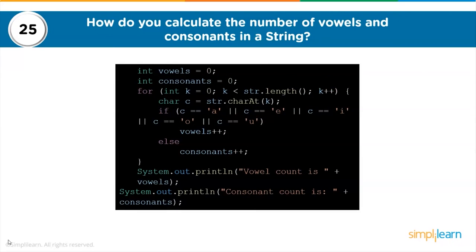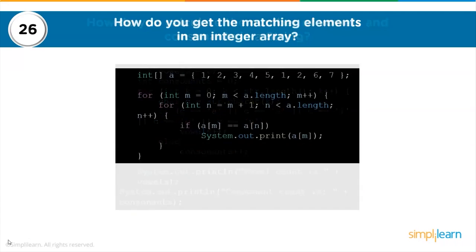The 25th question: how do you calculate the number of vowels and consonants in a string? Loop through the string; increment the vowel variable whenever a vowel is found using an if condition, otherwise increment the consonant variable, then print both counts. The 26th question: how do you get matching elements in an integer array? Declare an array, nest a couple of loops, compare the numbers with other numbers in the array, and print the matching elements whenever found.